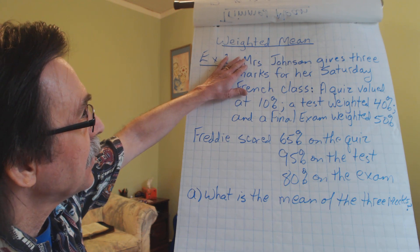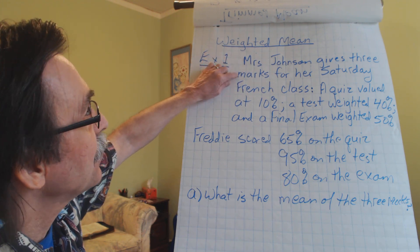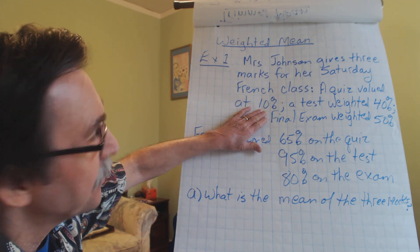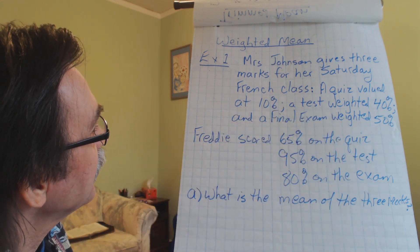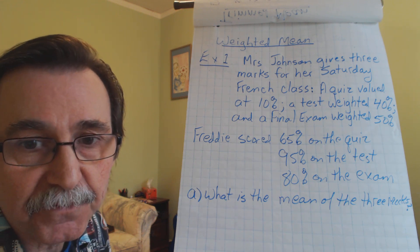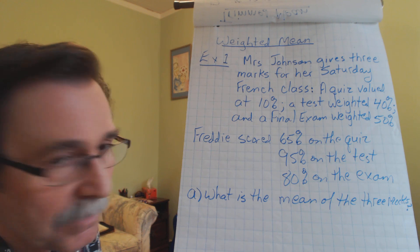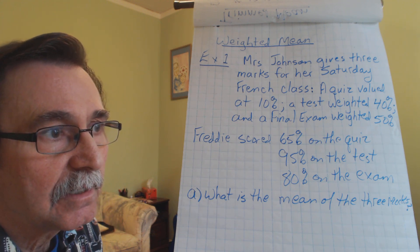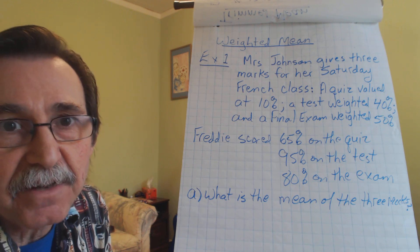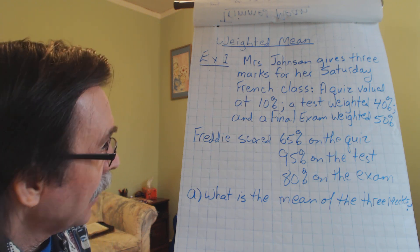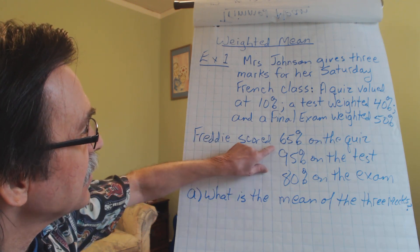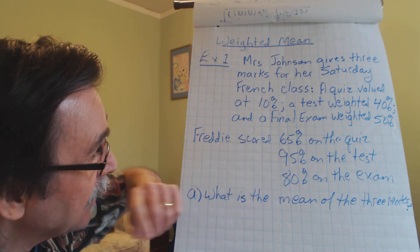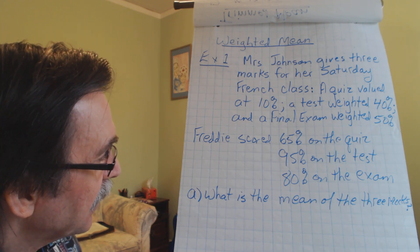So example one, it says, Mrs. Johnson gives three marks for her Saturday French class. A quiz valued at 10 percent, a test weighted at 40 percent, and a final exam weighted at 50 percent. And you know that a final exam is the most important thing in a class, right? And a quiz is usually low on the totem pole. There's purposes for quizzes and that's just to see if you're sharp. So we've got this student. His name's Freddy. He scored 65 percent on the quiz. Then he did really well on the test, 95 percent. And then he got 80 on the exam.